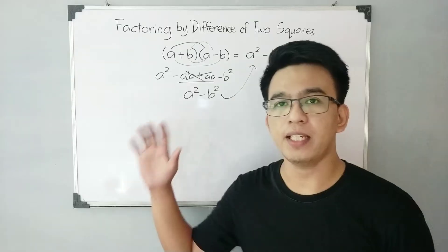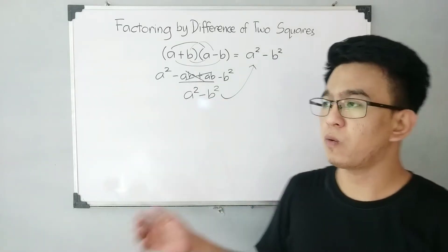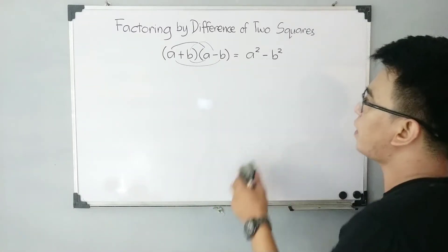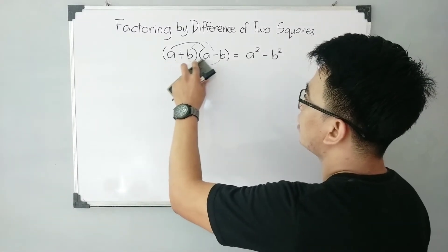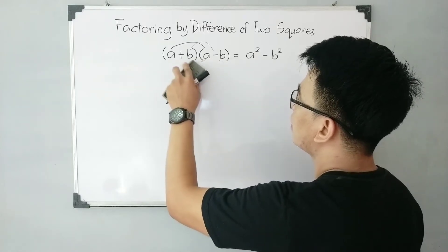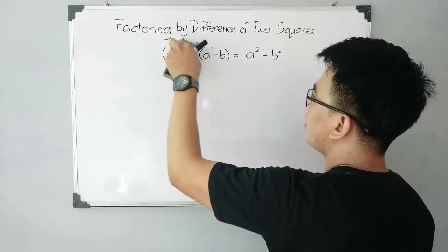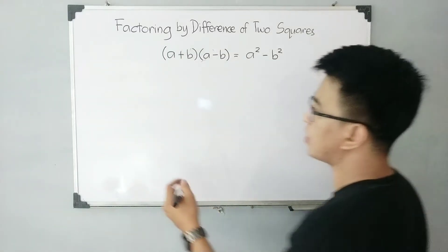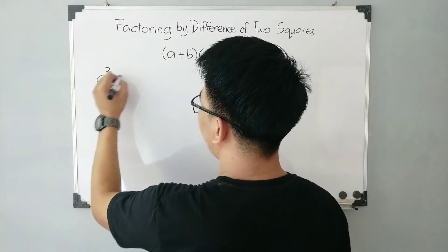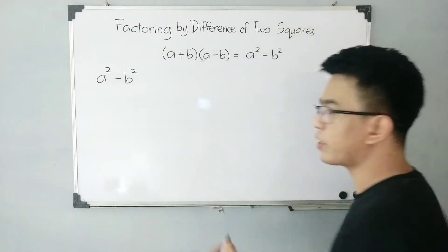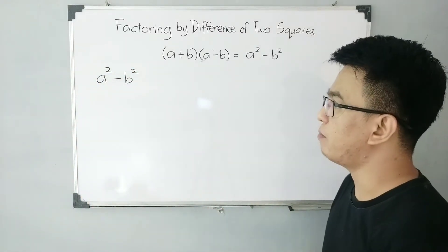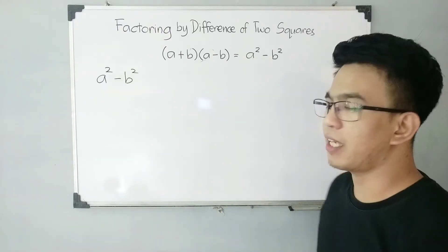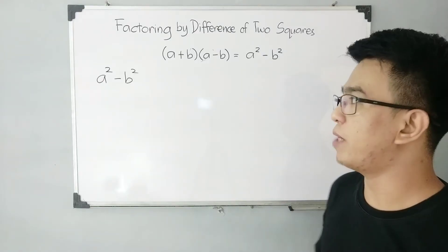So, this is a pattern for special products. Our target for today's lesson is: what if we are given this kind of polynomial expression, a squared minus b squared — how are we going to factor out this kind of problem? Using this pattern, we can get the factors of the given polynomial.